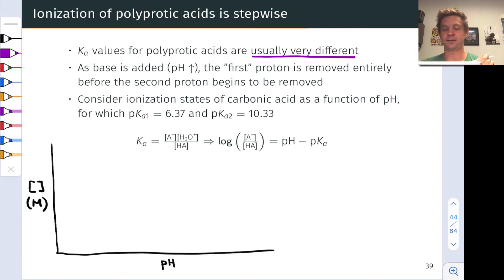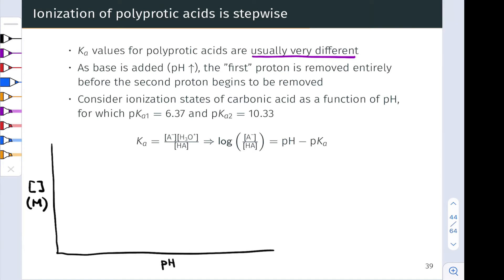Let's consider the ionization states of carbonic acid as a function of pH. Carbonic acid has three important ionization states which are conjugates of each other.